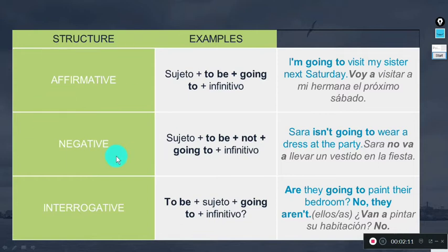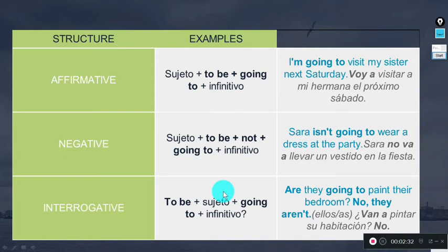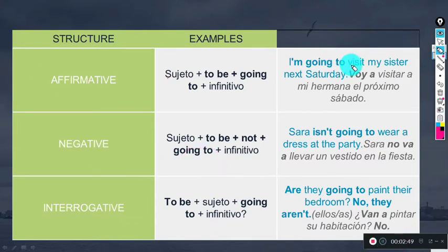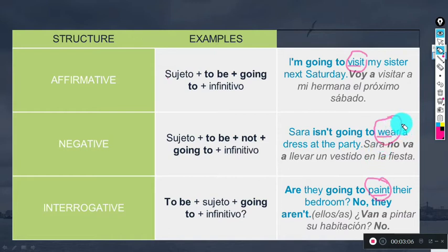Here we have the structure: affirmative, negative, and interrogative. In the affirmative, we need the subject + verb to be + going to + another verb. With the negative, the verb to be changes. With the interrogative, the verb to be changes position. We work with: subject, verb to be, 'going to,' and the infinitive verb — for example: visit, paint. These verbs are in their base (infinitive) form with no changes.